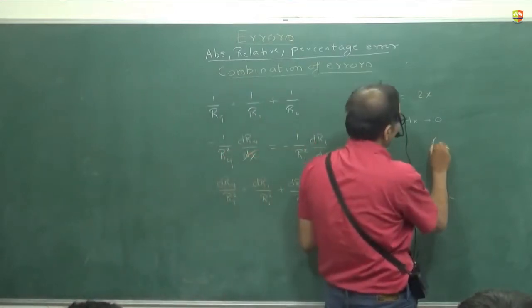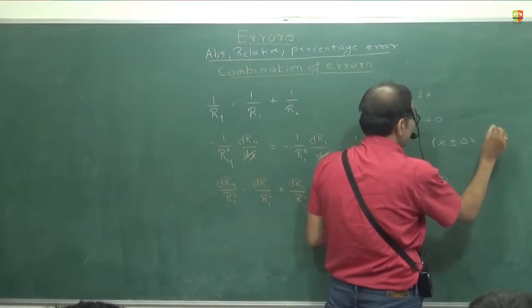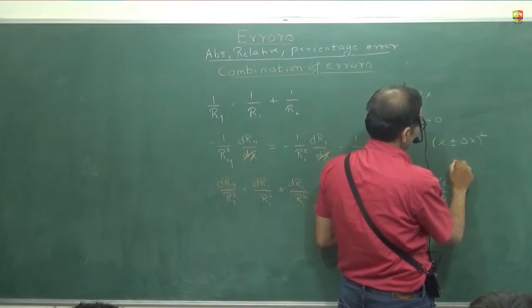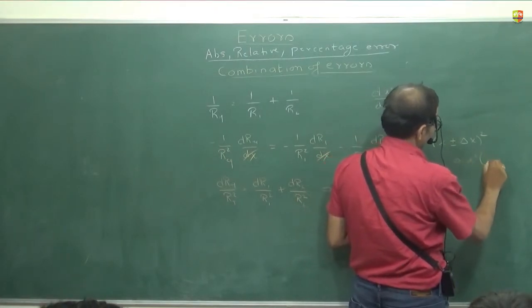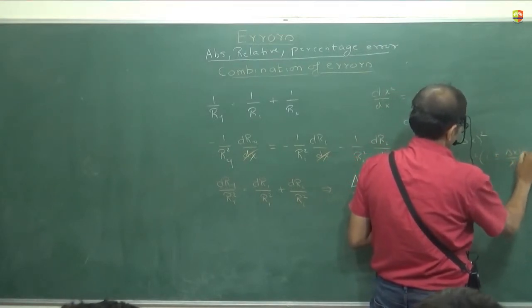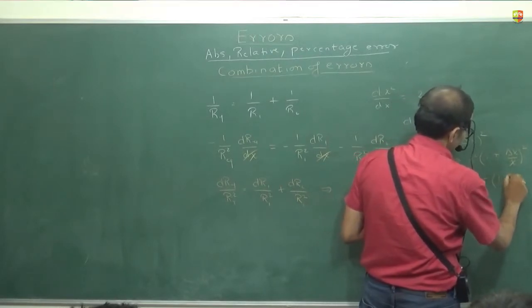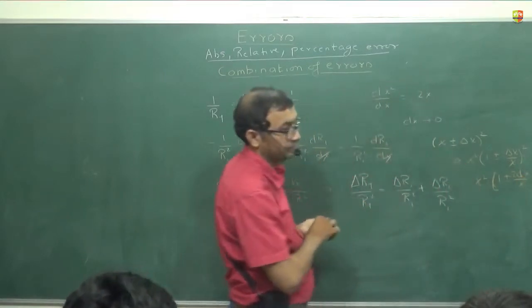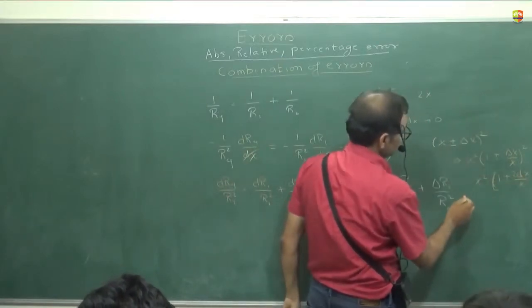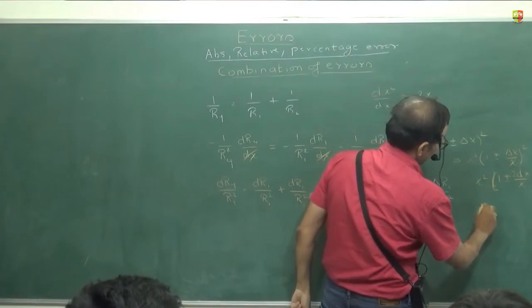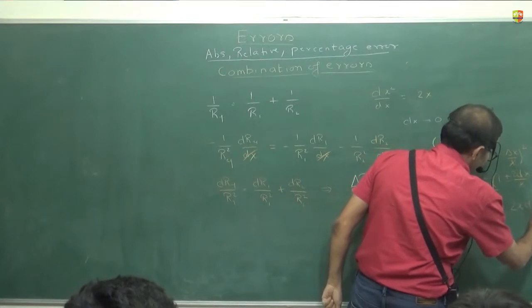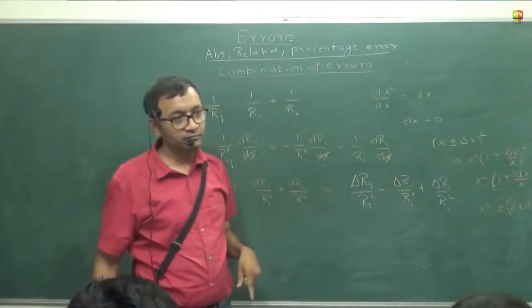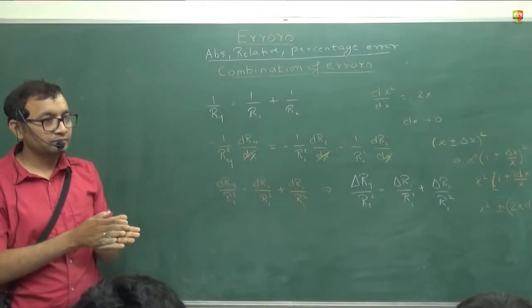If you change x little bit, what will x square become? x plus delta x, x plus delta x the whole square. This is what it will become. If delta x is tending to 0, then this will tend towards, you can take x square outside. It will become 1 plus delta x by x the whole square. But then binomial approximation will become 1 plus 2 delta x by x. Only when delta x is very small. So change in x square is 2x dx. If you divide it from dx, it becomes 2x. So it's not operator.